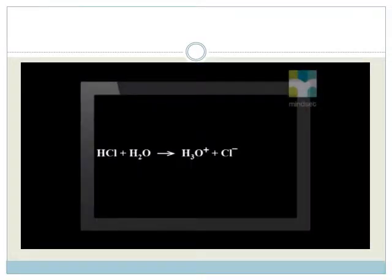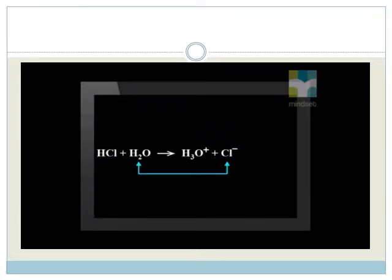When hydrochloric acid, HCl, donates its hydrogen proton, a chloride ion, Cl-, is formed. This chloride ion is a conjugate base of the acid. Therefore, we can see that water is the base and the Cl- ion is the conjugate base.